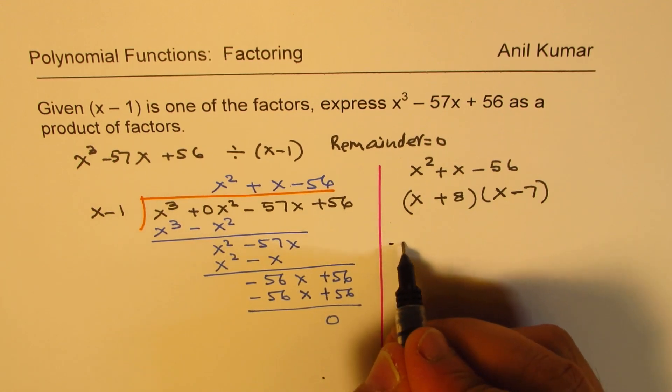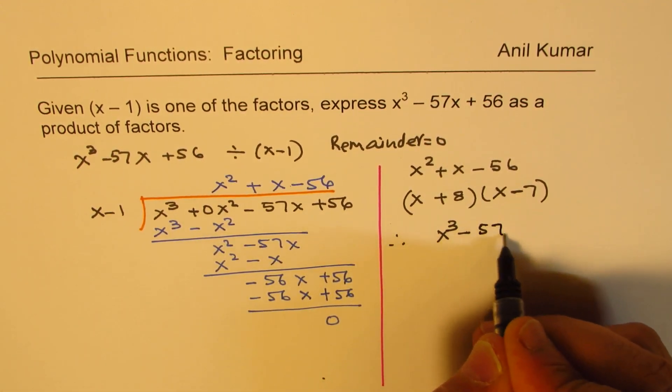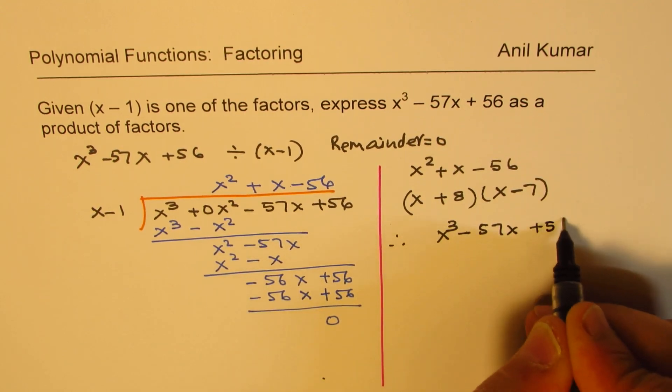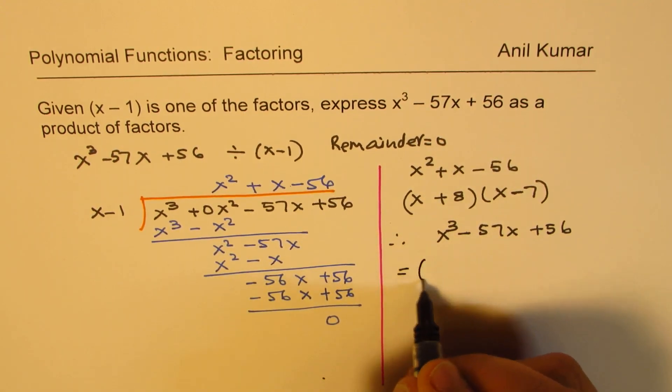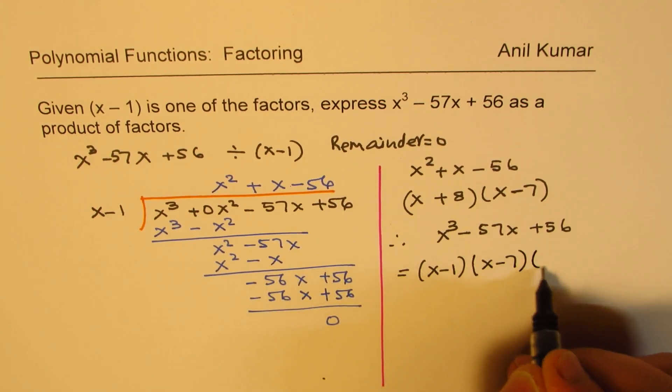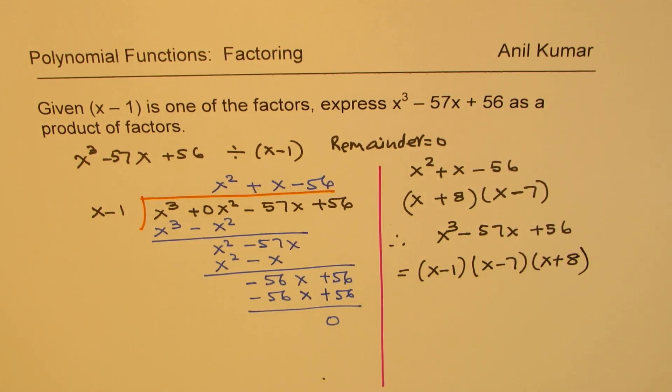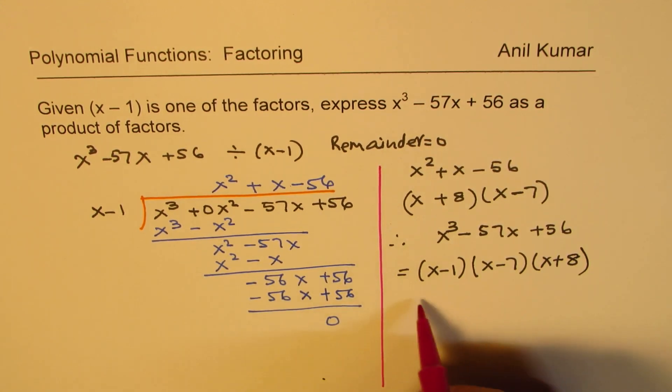And therefore, we can now express x cubed minus 57x plus 56 as equal to what? As equal to x minus 1 times x minus 7 times x plus 8. So that is the factored form which we are looking for.